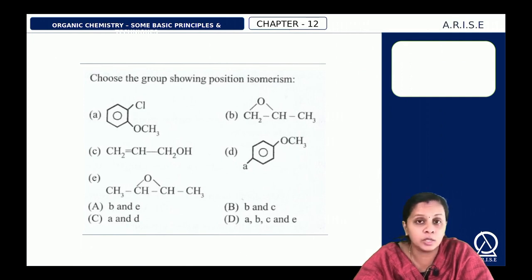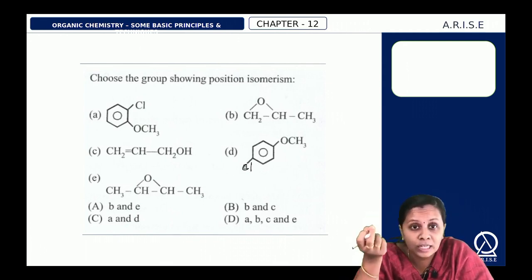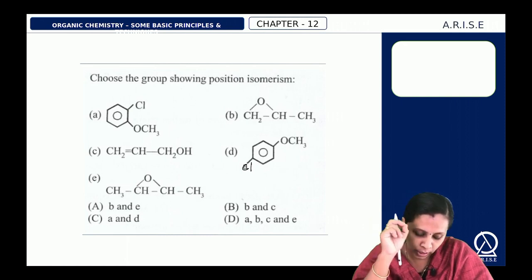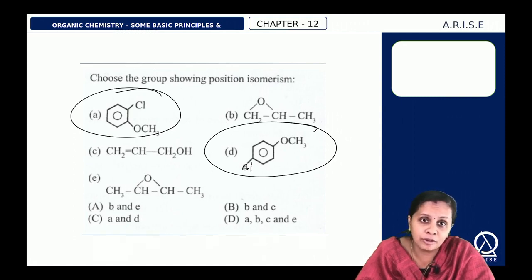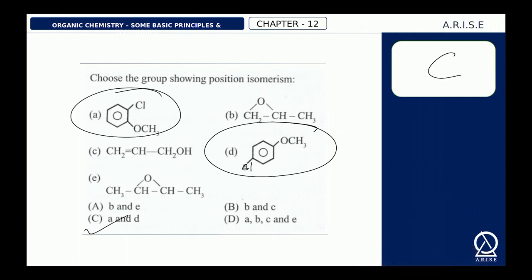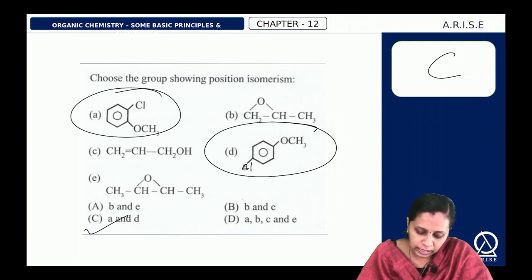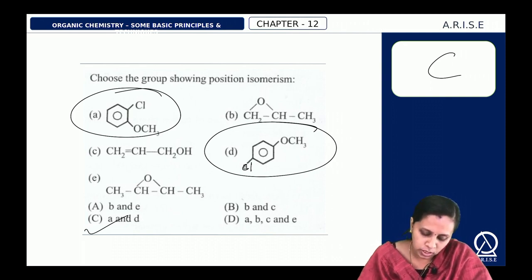Next: choose the group showing position isomers. Position isomers have the same molecular formula, same functional group, but differ in the position of the functional group. Compounds A and D have the same groups, same molecular formula, same functional group, but differ in position — so A and D are position isomers. The answer is option C. B and E cannot be position isomers because their molecular formulas don't match — B has 3 carbons and E has 4 carbons.